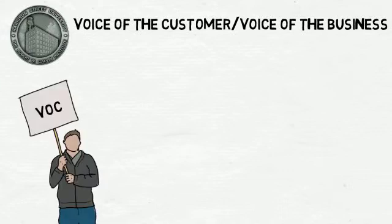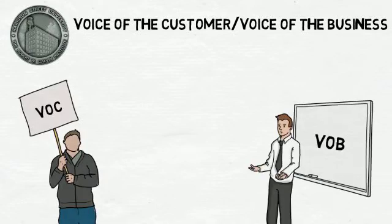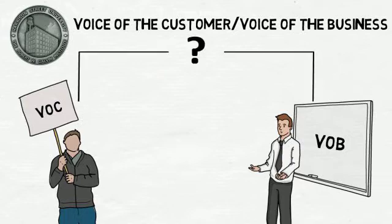While the team charter aids in aligning the team and the impacted parties around why a process must change and what it must change to, the voice of the customer and the voice of the business tool ensures that the needs of both parties are being heard and acted upon in such a way as to not do damage to the other. This tool, also known as the acronyms VOC and VOB, identifies gaps between what the customer would like and the desires of the business.